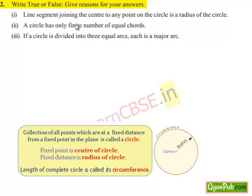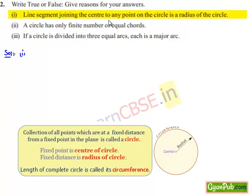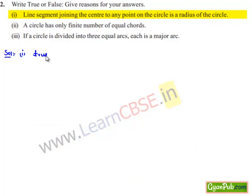Moving on to the second question: write true or false and give reasons for your answers. Solution for the first bit: a line segment joining the center to any point on the circle is called the radius of the circle — that is true. Because all the points of the circle are at equal distance from the center, and that equal distance is known as the radius.